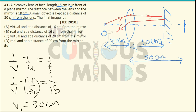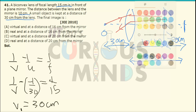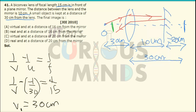Since the lens-mirror distance is 10 cm and the image is 30 cm behind the lens, the distance between the mirror and this secondary object is 20 cm. The plane mirror will form an image on the left-hand side at a distance of 20 cm, which places it 10 cm to the left of the mirror.